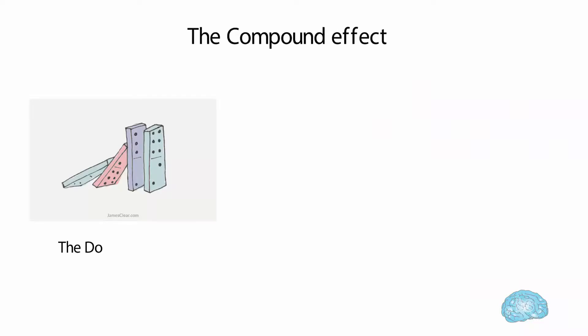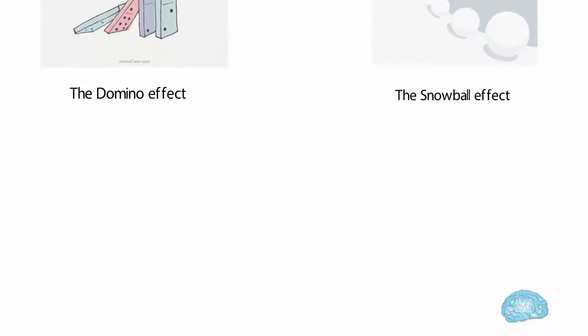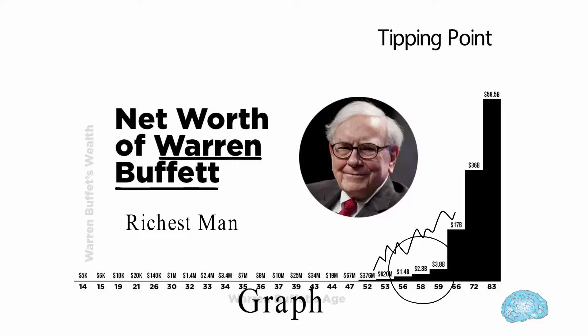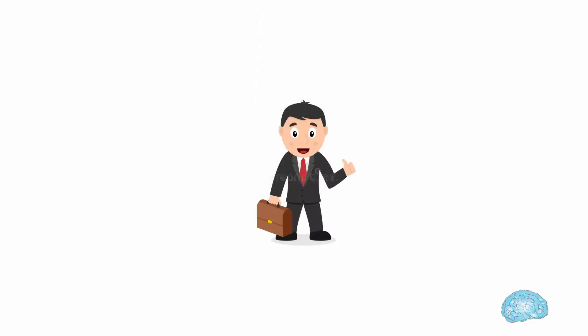The compound effect is also known as the domino effect or the snowball effect. If we see the graph of compounding, we will find that maximum growth happens in the last few years, which is after the tipping point. Warren Buffett, one of the richest men in the world, created 75% of his wealth only after reaching 50 years of his life. As you can see in this graph, this is the power of compounding.